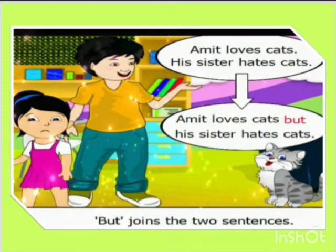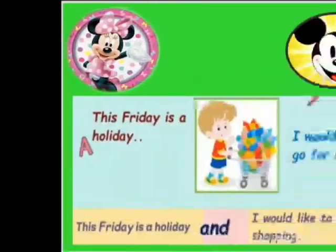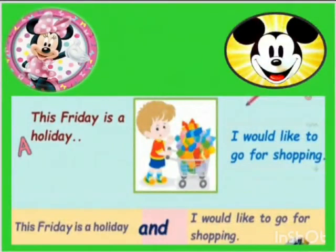But joins the two sentences. This Friday is a holiday. I would like to go for shopping. How to join both these sentences? This Friday is a holiday and I would like to go for shopping. This is how the conjunction 'and' is added to join both sentences.